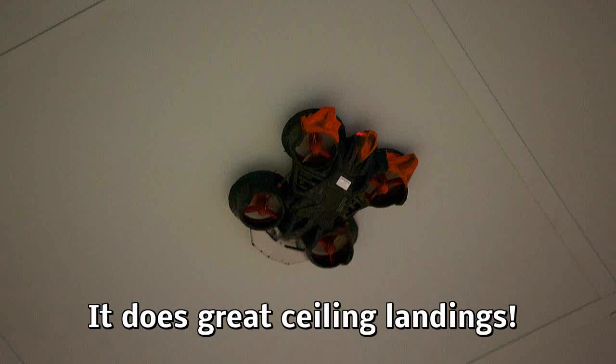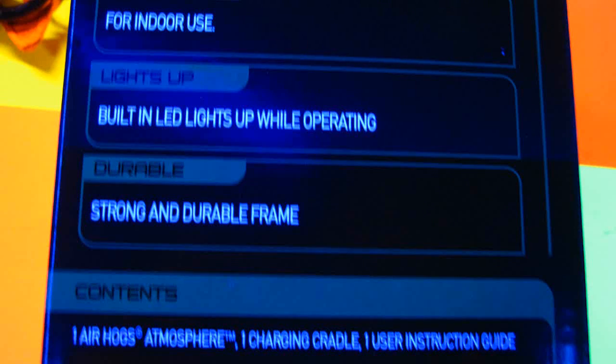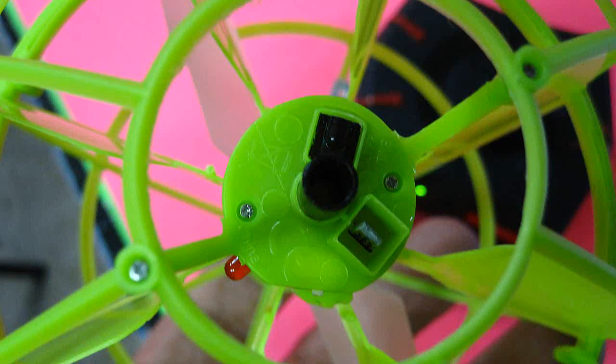Well this mini ball called an Atmosphere is supposed to be controlled by your hand. It has a photo optic sensor on the bottom and when your hand gets near it it's supposed to speed up.